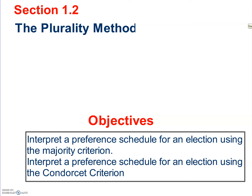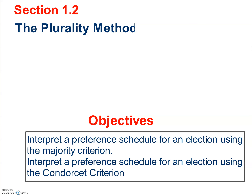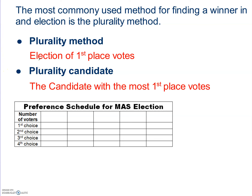We're also going to do the plurality method, which is the one you're most familiar with. The plurality method is the most commonly used method. The definition: the plurality method is simply an election of first place votes. The plurality candidate — the winner — is simply the candidate that has the most first place votes.